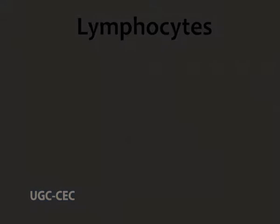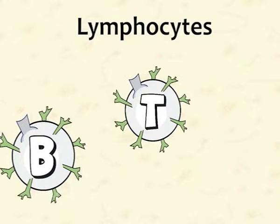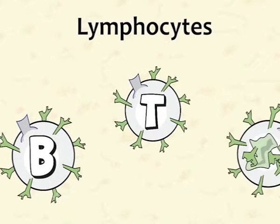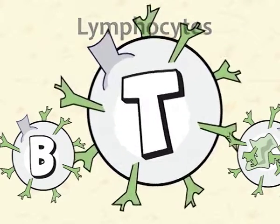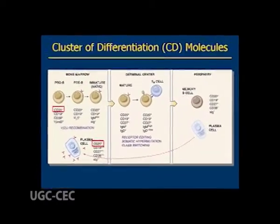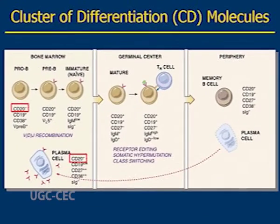Lymphocytes constitute 20–40% of the body's WBCs and 99% of the cells in the lymph. Lymphocytes are subdivided into three populations: B cells, T cells, and NK cells. Different lineages or maturation stages of lymphocytes express different membrane molecules called cluster of differentiation, or CD.